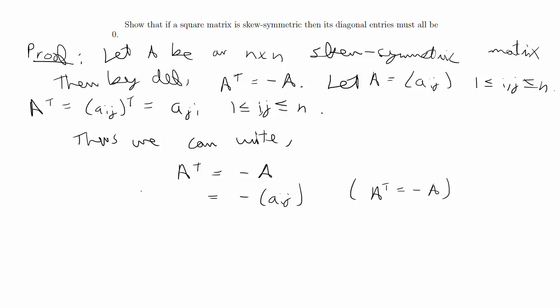We can also say that this equals aji, for 1 ≤ i, j ≤ n. So this must be true when i equals j.